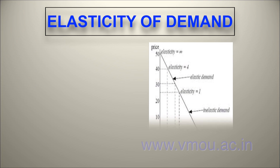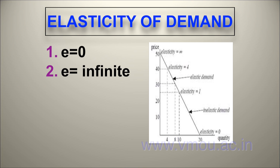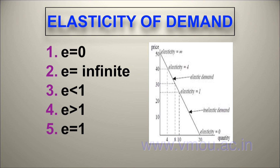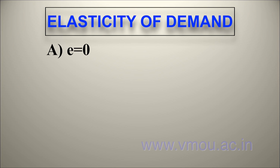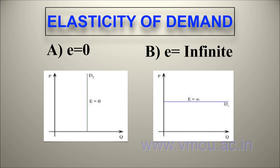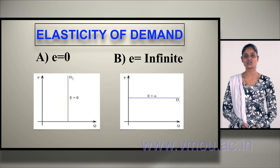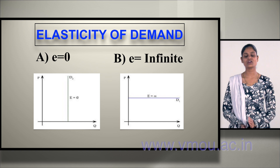Elasticity of demand is divided into five parts: e equals zero, e equals infinite, e less than one, e greater than one, and e equals one — each shown by different figures. E equals zero means your demand is constant — your price fluctuates but your quantity remains the same regardless of price changes. E equals infinite means your price is constant whereas your demand fluctuates.